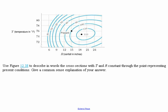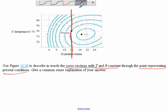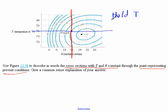Okay, so now let's think about the idea of keeping our functions or keeping our variables constant. So what are the cross sections with T and R constant through the point representing present conditions? Well, here's my present conditions. So this line is if I held R constant. And this line here is if I held temperature constant.